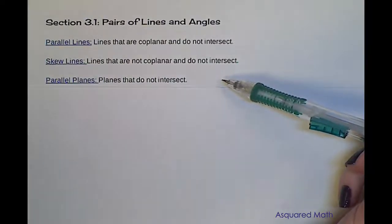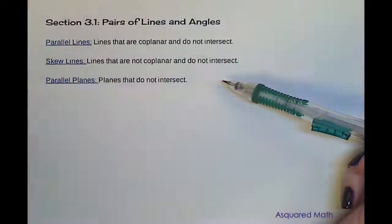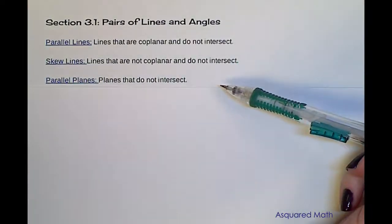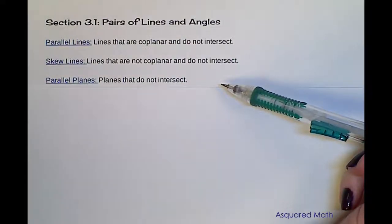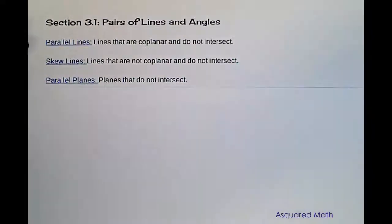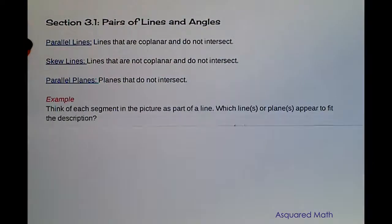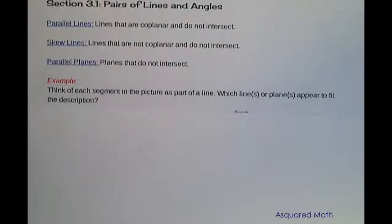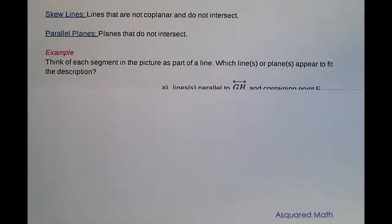And then we're dealing with what's called parallel planes, and that's two planes out in space that will never intersect. Let's do an example to define some of these things.